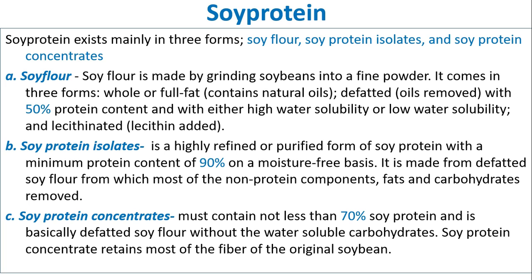Soy protein isolates are a highly refined form of soy protein with a minimum protein content of 90% on a moisture-free basis. They are made from defatted soy flour from which most non-protein components — fats and carbohydrates — are removed. Soy protein concentrates must contain not less than 70% soy protein and are basically defatted soy flour without the water-soluble carbohydrates. Soy protein concentrate retains most of the fiber of the original soybean.